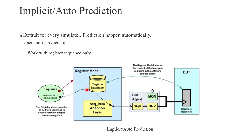With the help of this register sequence, we are updating the RAL database registers. But we cannot directly drive a register sequence to the driver, so first this register sequence needs to be converted into the bus sequence. With the help of the adapter, we are converting it into bus sequence. The driver's responsibility is to drive this sequence to the DUT register, and the DUT register memory will update. On the other hand, the monitor will capture the same information and broadcast it to multiple components like scoreboard, coverage collector, and reference model with the help of the analysis port.